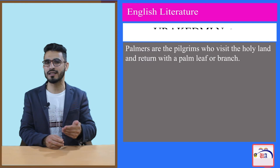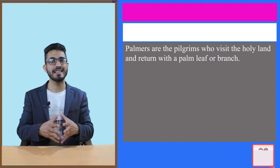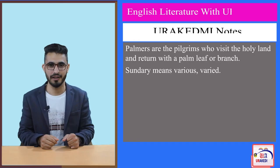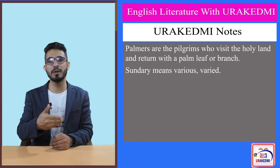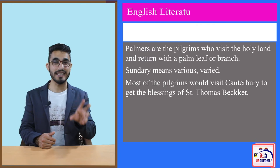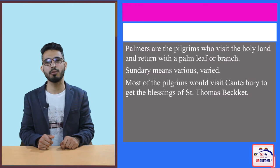They would go to strange lands, coming back to start pilgrimages to different parts of the country, to unknown places, unknown lands, to distant shrines well-known in sundry lands. And especially from every shire's end of England, they took the Canterbury road. Most pilgrims — those who had already been to Jerusalem — would go on pilgrimage to Canterbury to get the blessings of Saint Thomas Becket. In Canterbury there is a shrine of this famous saint and martyr. You can check out the linked video for detailed information about Saint Thomas Becket.